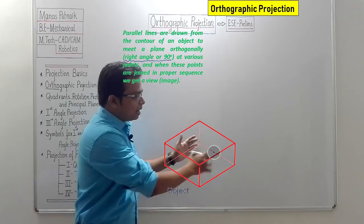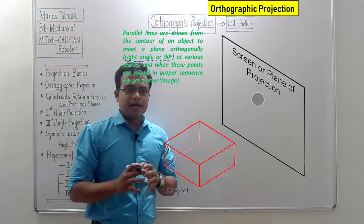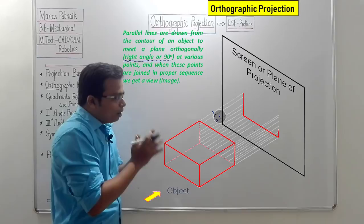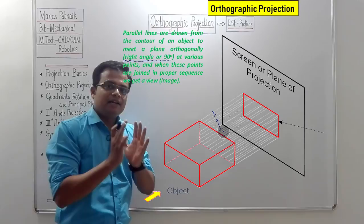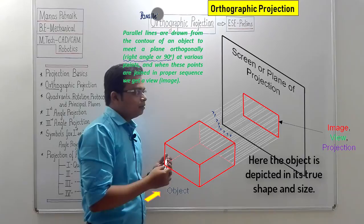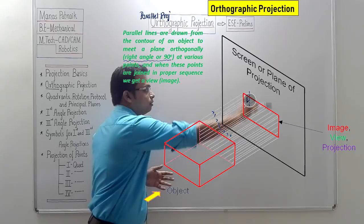Let me demonstrate what orthographic projection is all about. Again, we have two elements: the object, and behind it a screen — technically referred to as the plane of projection. The rays of sight are also referred to as projectors. One key difference you can immediately point out is that all the rays of sight, all the projectors, are parallel to each other. Therefore, orthographic projection falls in the category of parallel projection.